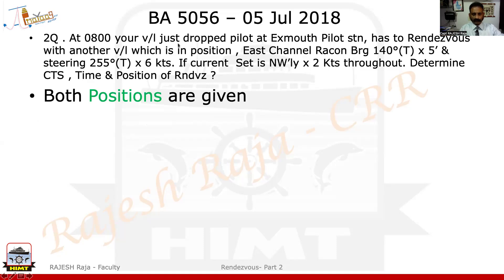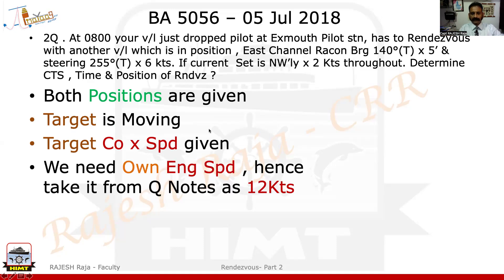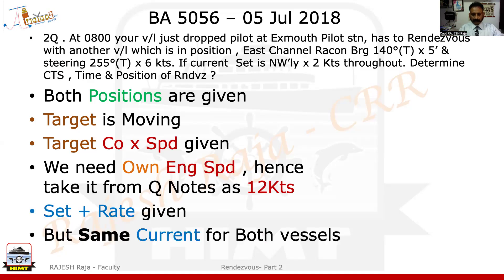Let us quickly analyze the question. Both vessel positions are given: Exmouth pilot station for own vessel, and the target based on the East Channel beacon. Both positions are known - you would plot them on the chart. The target is moving; both course and speed are given. For own ship, the question asks for CTS, but I need an engine speed - taking it from the notes on top of the MMD question paper, it is 12 knots. The current rate is given in the question and it is the same for both vessels.